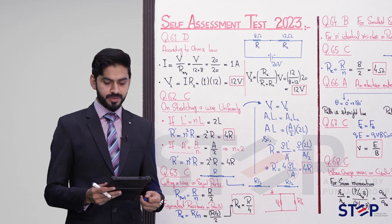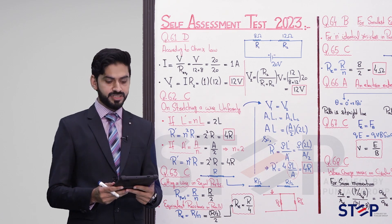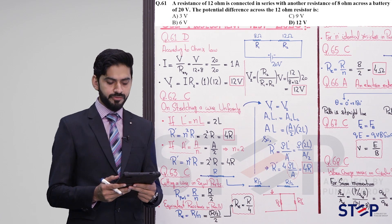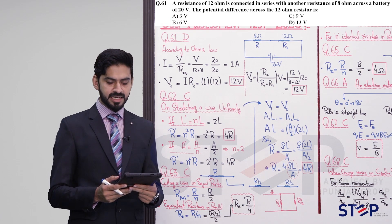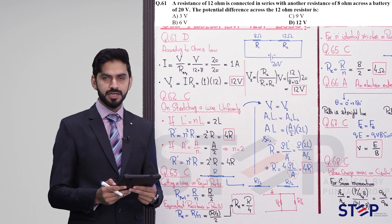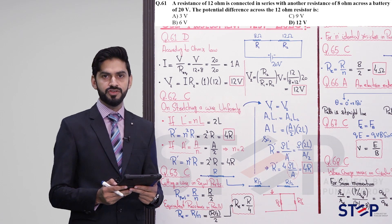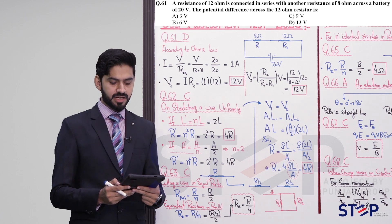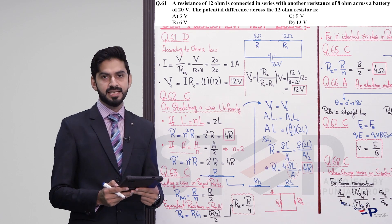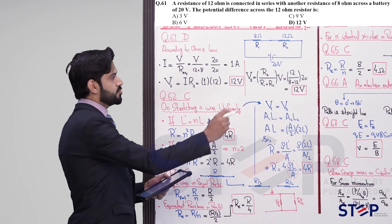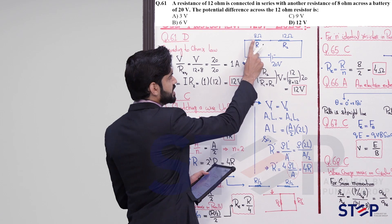This is the physics portion — question 61. The statement is: a resistance of 12 ohm is connected in series with another resistance of 8 ohm across a battery of 20 volts. Two resistors are connected in series across a battery. Find the potential difference across the 12 ohm resistor.